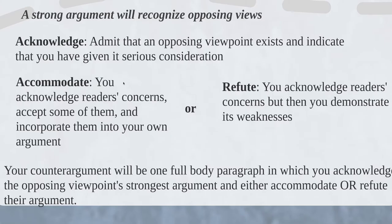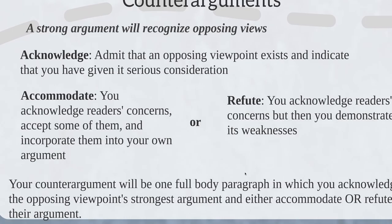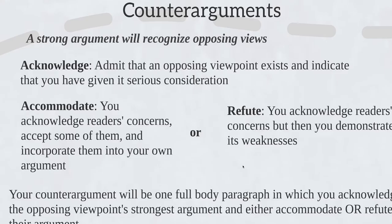If you absolutely cannot refute because the other side does have a point, you'll do an accommodation — acknowledge the reader's concerns and accept some of them, possibly incorporating them into your own argument. Be careful: you're not dropping your thesis or switching sides. You still maintain that your opinion is the right one — you just say they have some great points that can't be ignored. So your counter-argument is one full body paragraph where you either refute or accommodate, but you must acknowledge the other side exists. For some of you this is a new concept, but just think of it as its own body paragraph.